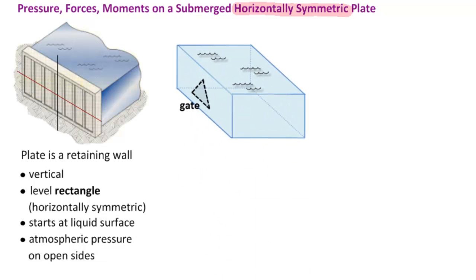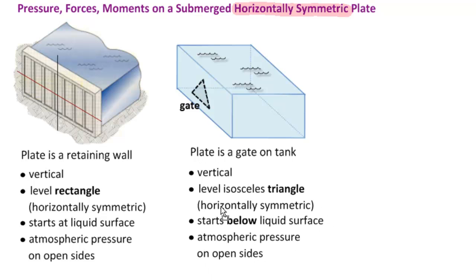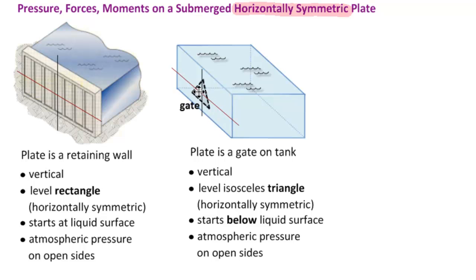Another example: we have a tank, and the plate is a gate on the tank. Its properties: again, it's vertical, so the angle with the horizon is 90 degrees. It's a level isosceles triangle — level means the base is parallel to the horizon. Here is our axis of symmetry, and at every point on this level, we have the same amount of gate on the left side as on the right side. This particular plate starts below the liquid surface, so we have to go down this level. Again, atmospheric pressure on the open sides.